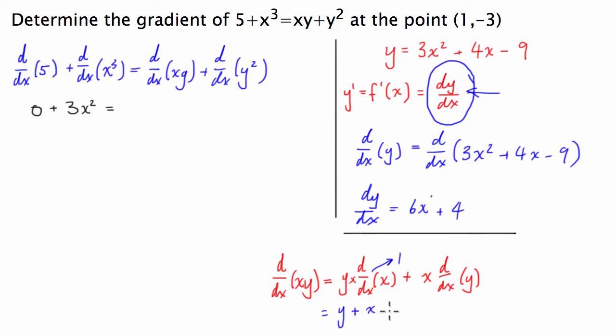So plus x dy/dx, so we're going to substitute that piece in. This piece here is probably one of the more trickier pieces and we have to use the chain rule to solve it. So we've got d/dx of y squared.